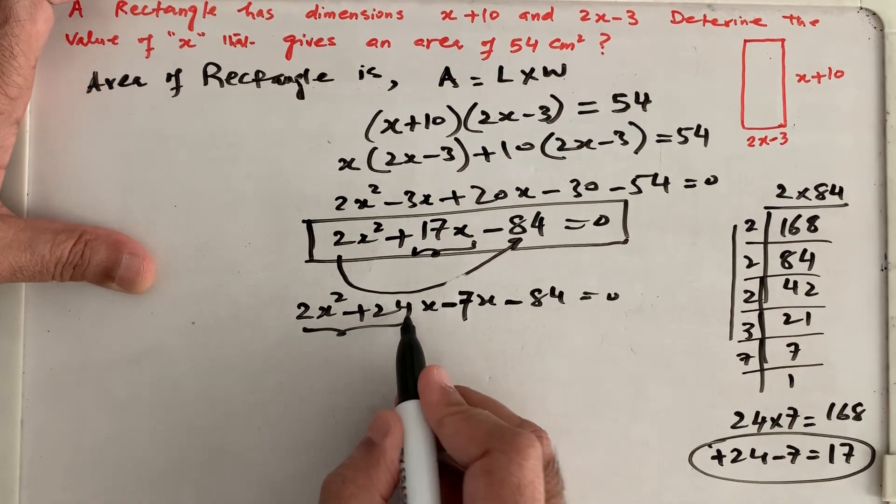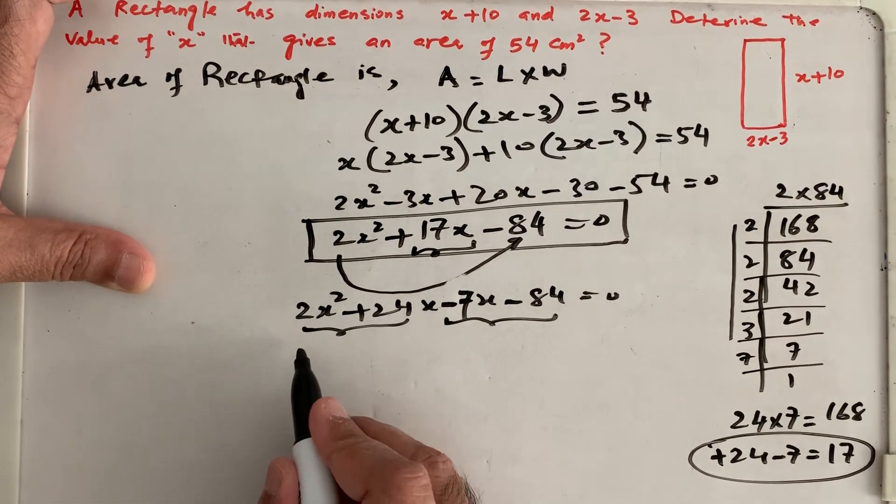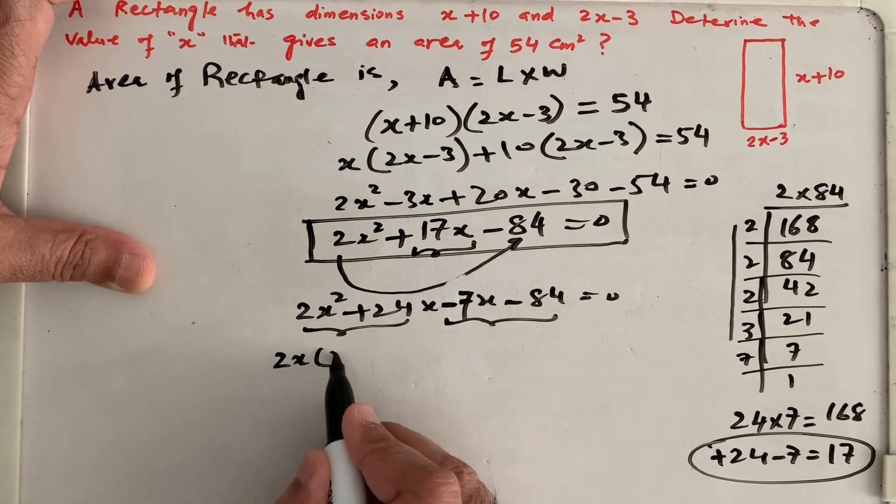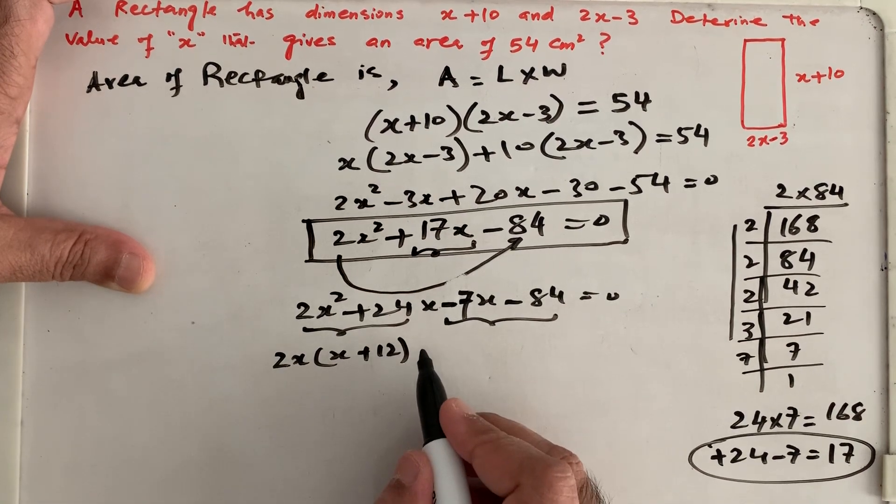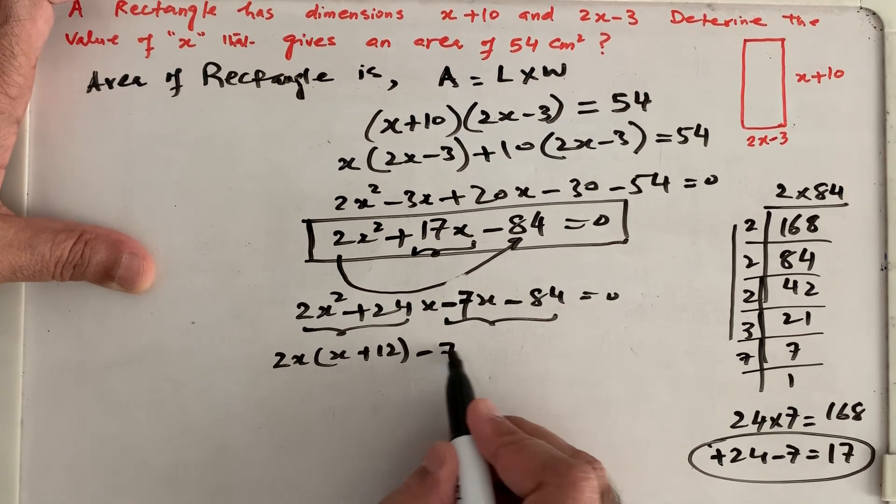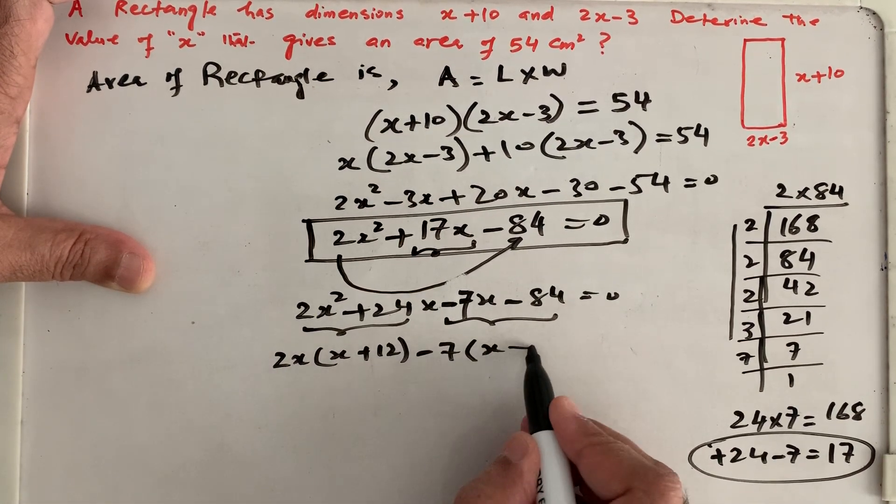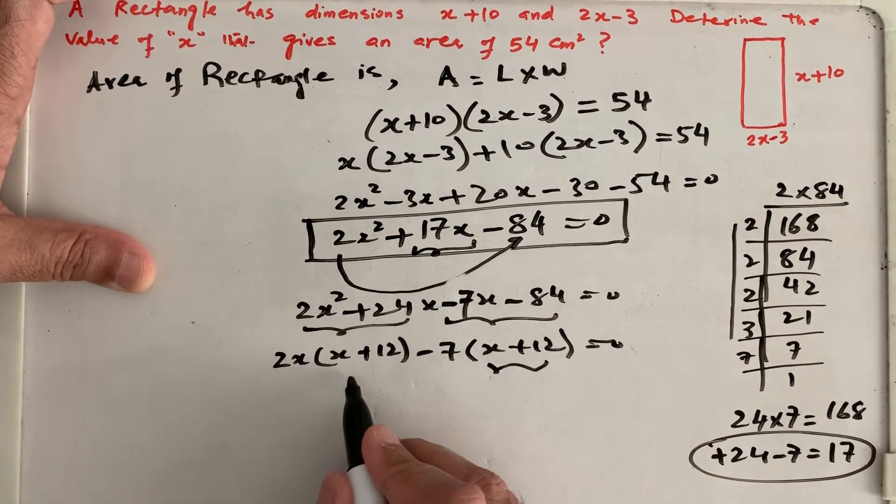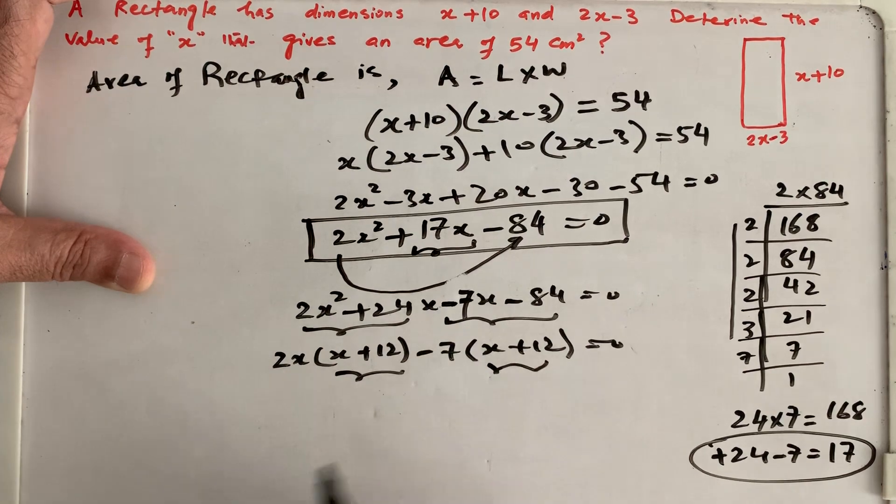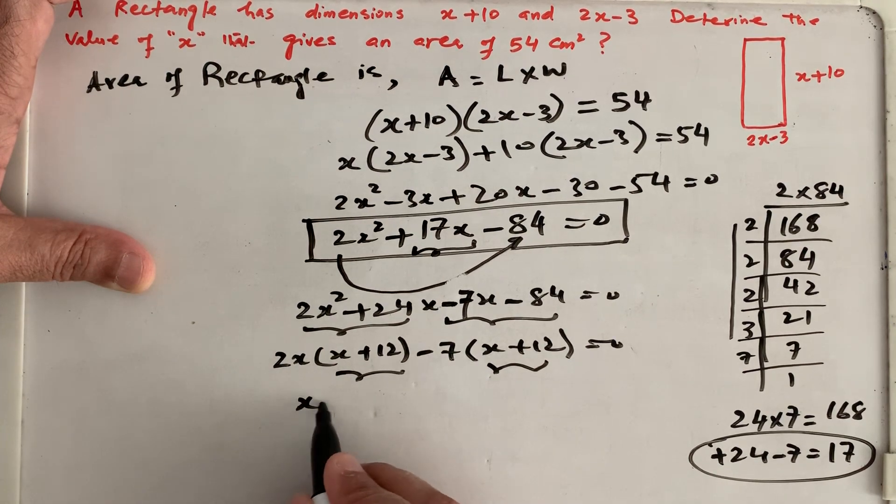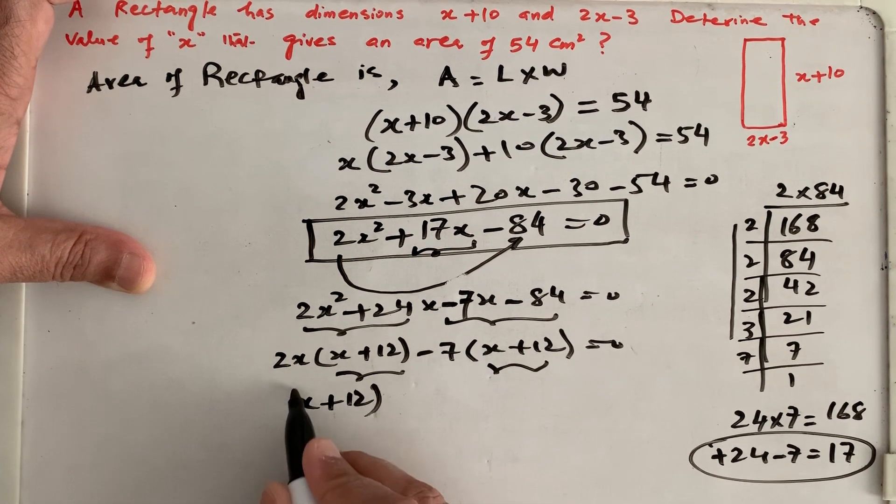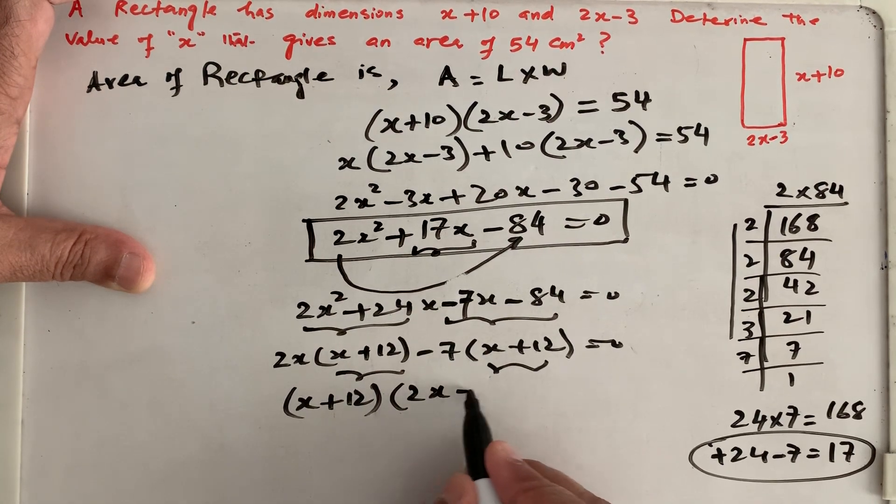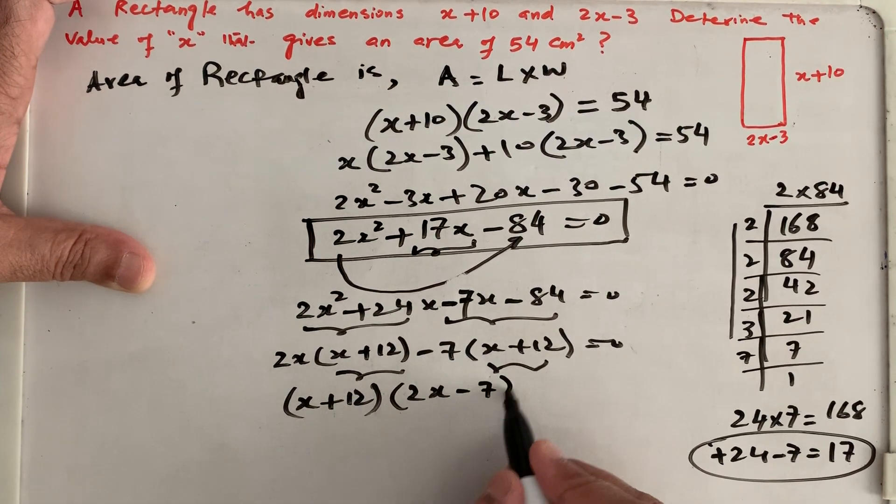And then we have to pair it up and take the common. 2x is common, x plus 12. Minus 7 is common, x plus 12 again equals to 0. And these two brackets have to be the same, and we are seeing that they are same. And we have to keep them once in the bracket, and whatever we took out as a common, I have to put it into the separate bracket. 2x minus 7.